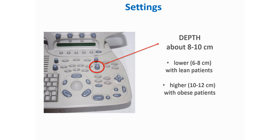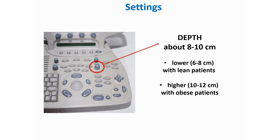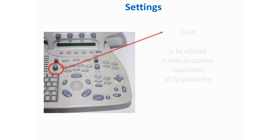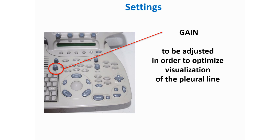The depth should be about 8 to 10 cm, a bit less with lean patients and a bit more with obese patients. The gain should be optimized to better visualize the pleural line.